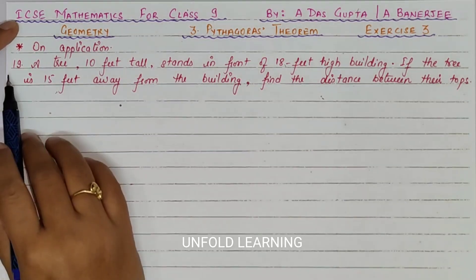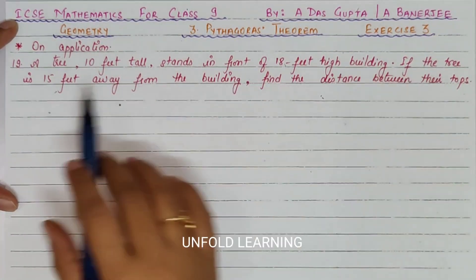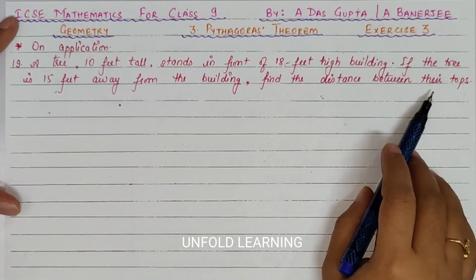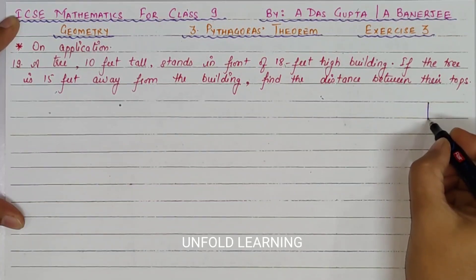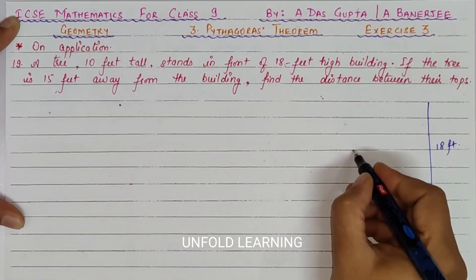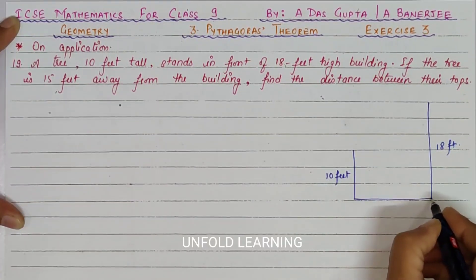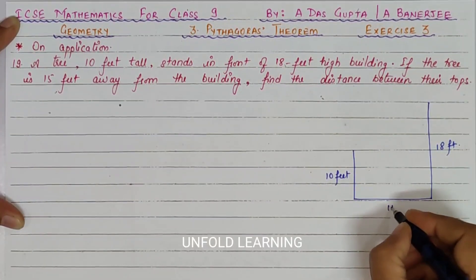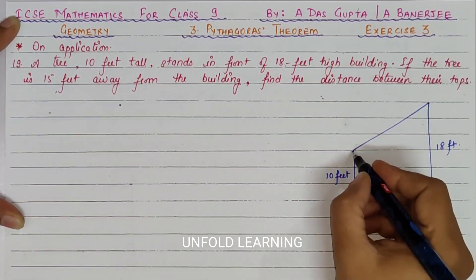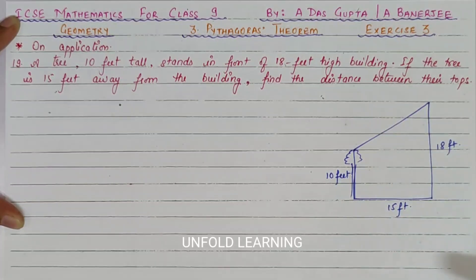Let's start with Question No. 19. A tree 10 feet tall stands in front of an 18 feet high building. If the tree is 15 feet away from the building, find the distance between their tops. So remember, this is our building which is 18 feet, here we have a tree which is 10 feet, and the distance between these two is 15 feet.